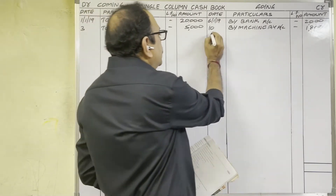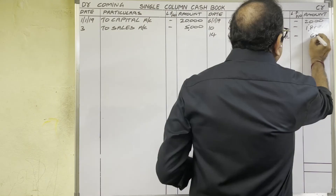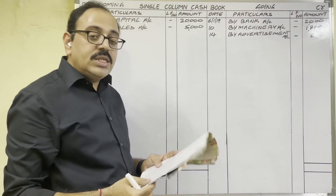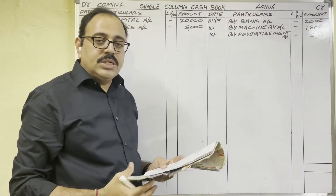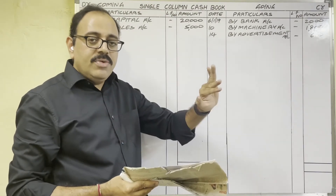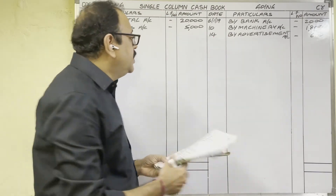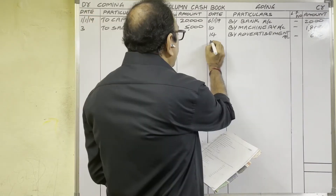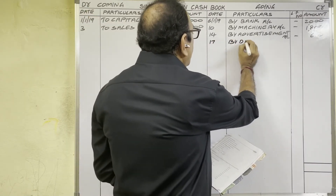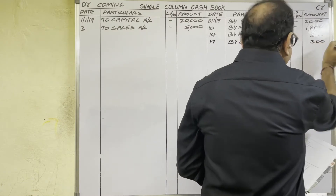14th January: advertisement expenses paid 600 rupees. Cash is going from the firm, credit side. Write: 'By Advertisement Account', 600 rupees. 17th January: drawings 300 rupees. The owner withdrew money for personal use, so cash is going from the firm, credit side. Write on 17th date: 'By Drawings Account', 300 rupees.